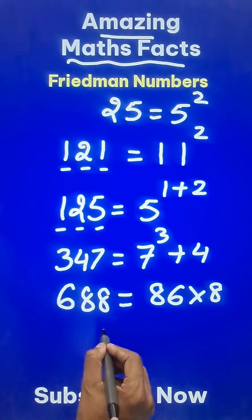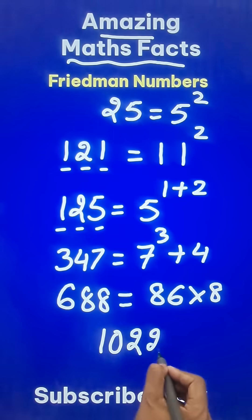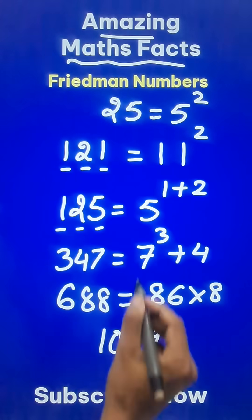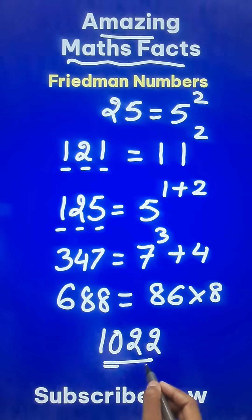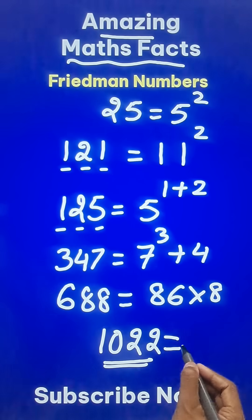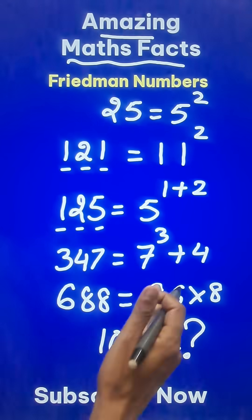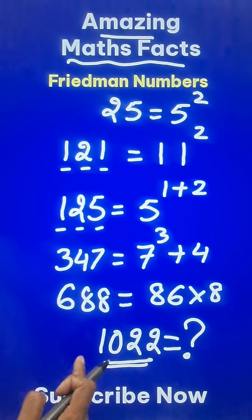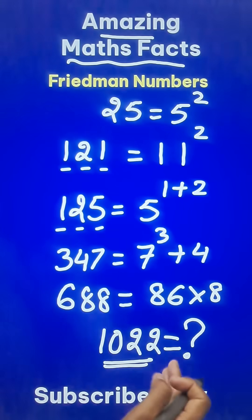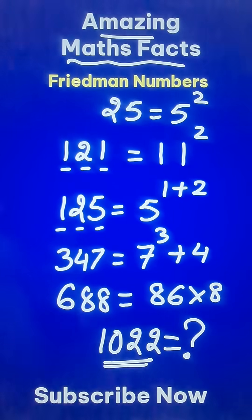Can you tell me — is 1022 a Friedman number? If I say yes, can you tell me how to represent it using operations and the digits 1, 0, 2, 2? Do comment below!